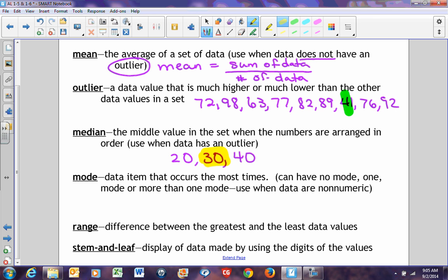However, let's say I had a set of data that looked like this: 20, 20, 30, 40. Now I have two middle numbers. If I have two middle numbers to be able to determine what my median is, I would have to add those two numbers together and divide them by 2. Well, 20 plus 30 is 50, 50 divided by 2 is 25, so my median would be 25.